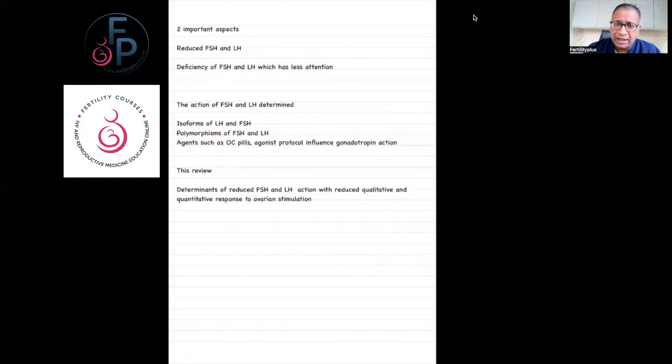The two important aspects here: one of them is reduced FSH/LH and the deficiency of FSH/LH, which traditionally has had less attention. The action of FSH/LH is determined by the isoforms of LH and FSH, polymorphism of FSH and LH, and agents such as the GnRH agonist protocol all influence gonadotrophin action. In this review, the authors tried to look at the determinants of reduced FSH and LH actions with reduced quantitative and qualitative response to ovarian stimulation.